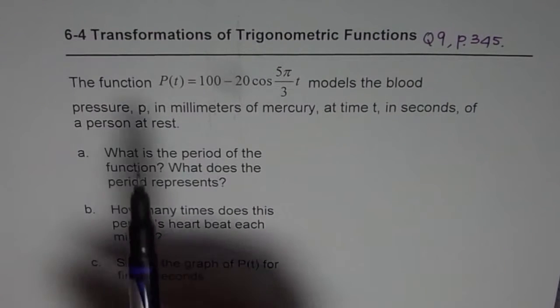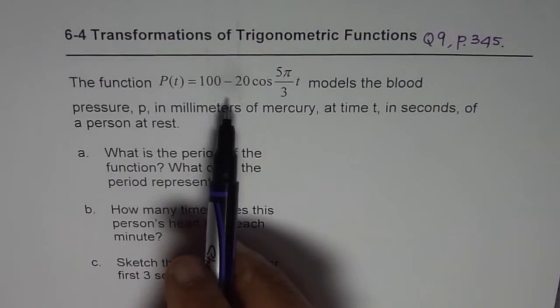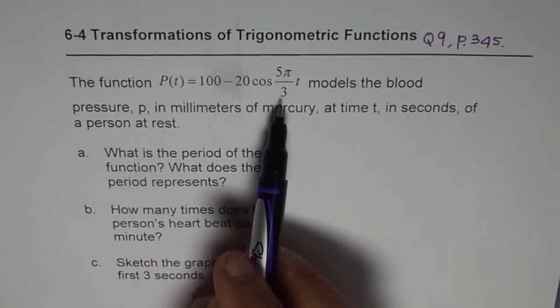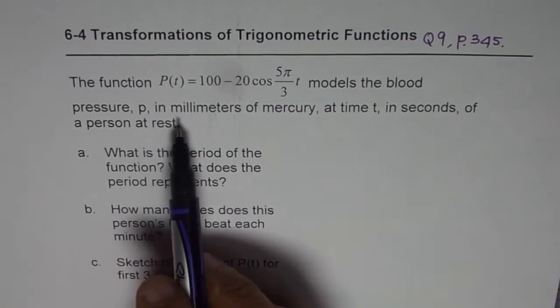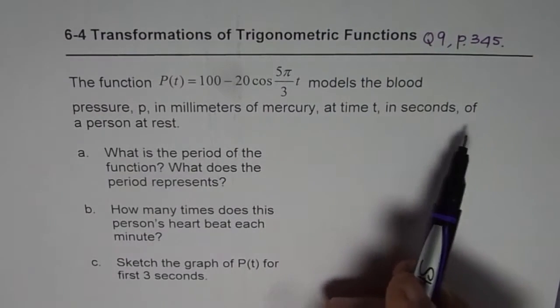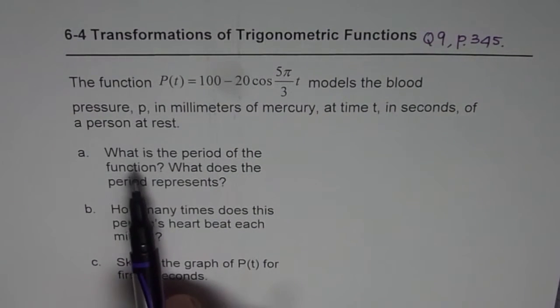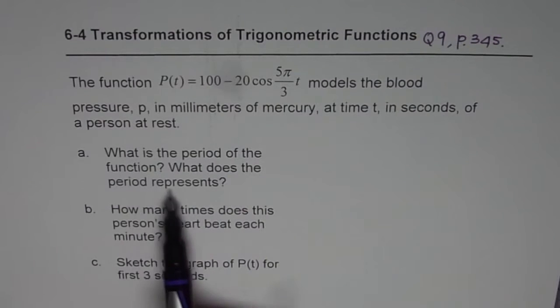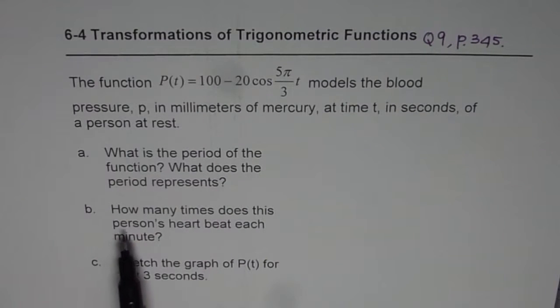The question here is: The function P(t) = 100 - 20cos(5π/3)t models the blood pressure p in millimeters of mercury at time t in seconds of a person at rest. Part a: What is the period of the function? What does the period represent? Part b: How many times does this person's heart beat each minute? And part c: Sketch the graph of P(t) for first 3 seconds. I've modified this question since there's very limited space.